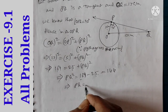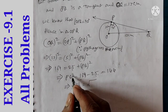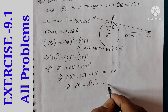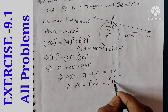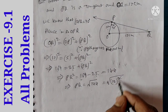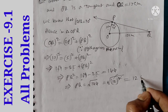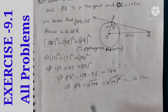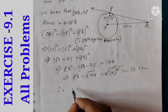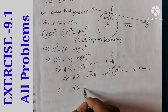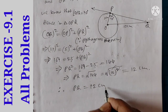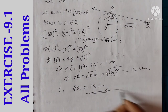PQ is equal to the square root of 144. Square root of 144 is 12. Therefore, the length of the tangent PQ is equal to 12 centimeters.